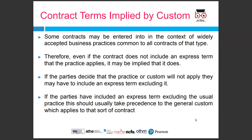A case regarding custom is Hutton v Warren (1836). The claimant was a farmer who had tenancy on the defendant's fields. He had planted corn and barley and worked the fields to ensure the crops would grow. Before the field was due to be harvested, the tenancy was terminated. The claimant submitted a bill to the defendant for the work and cost of seed spent on the field, as was customary in farming tenancies. The defendant refused to pay, stating there was nothing in the tenancy agreement stating such compensation was payable. The court implied a term providing for compensation for the work and expenses undertaken in growing the crops, as it was common practice for farming tenancies to contain such a clause.